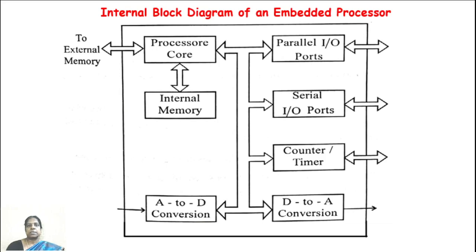There are also external buses which connect the board with another board or with external peripherals available off-board or in an extension system. The USB is an off-board bus, for instance. Connectors on the board are for certain buses — Ethernet, USB, RS-232, etc. are examples of connectors. This is about the internal block diagram of an embedded processor.